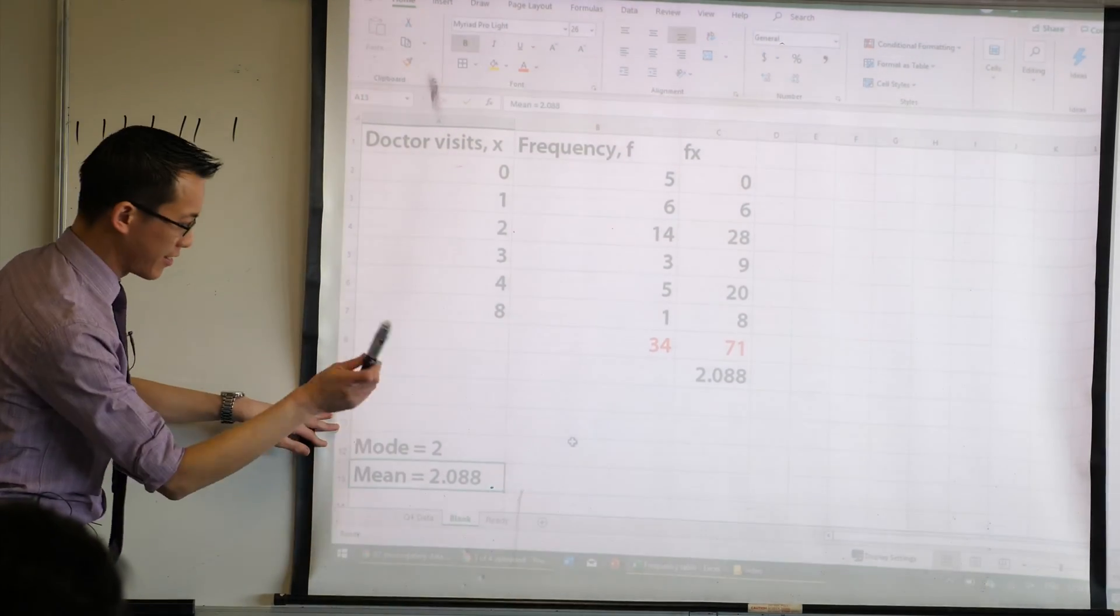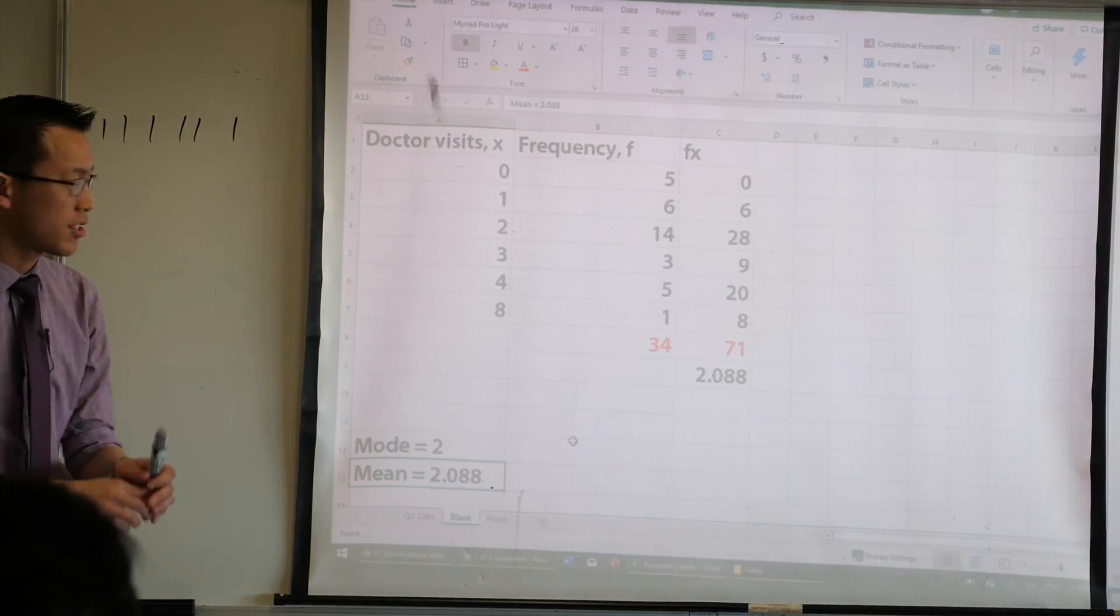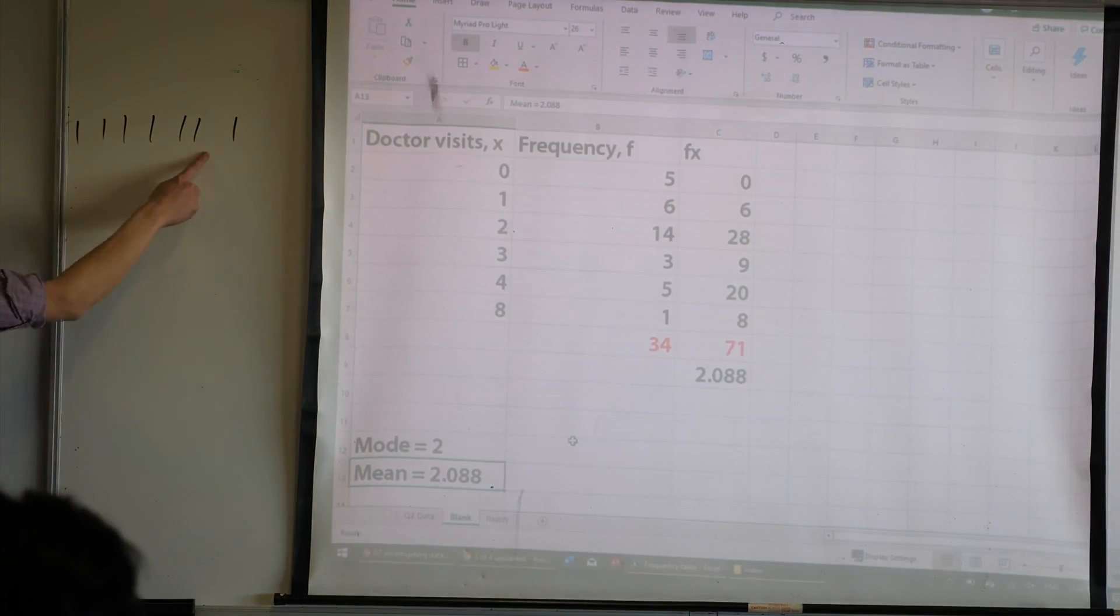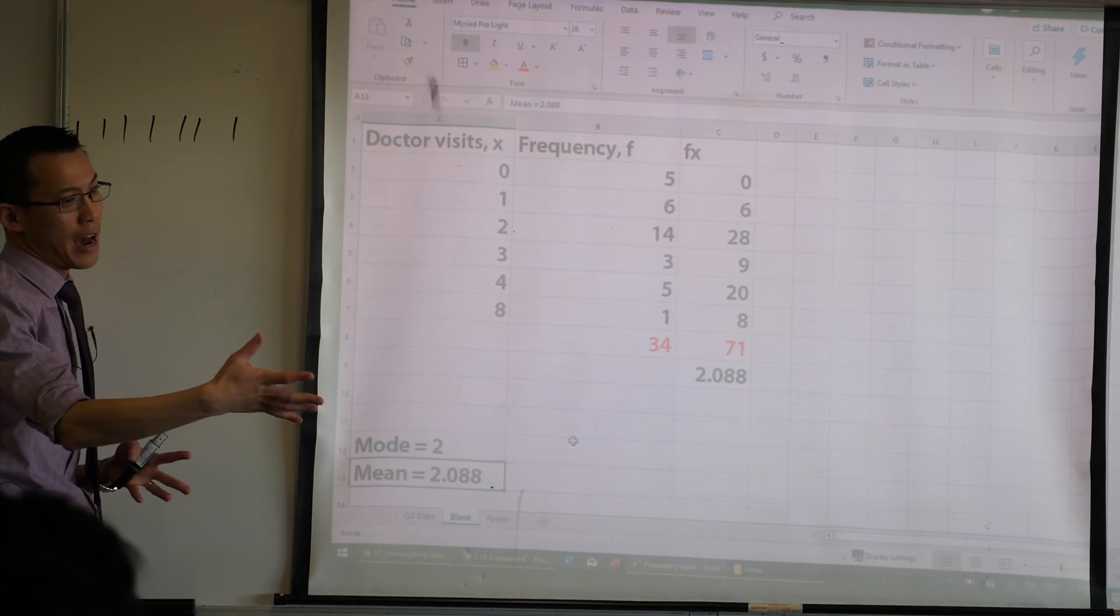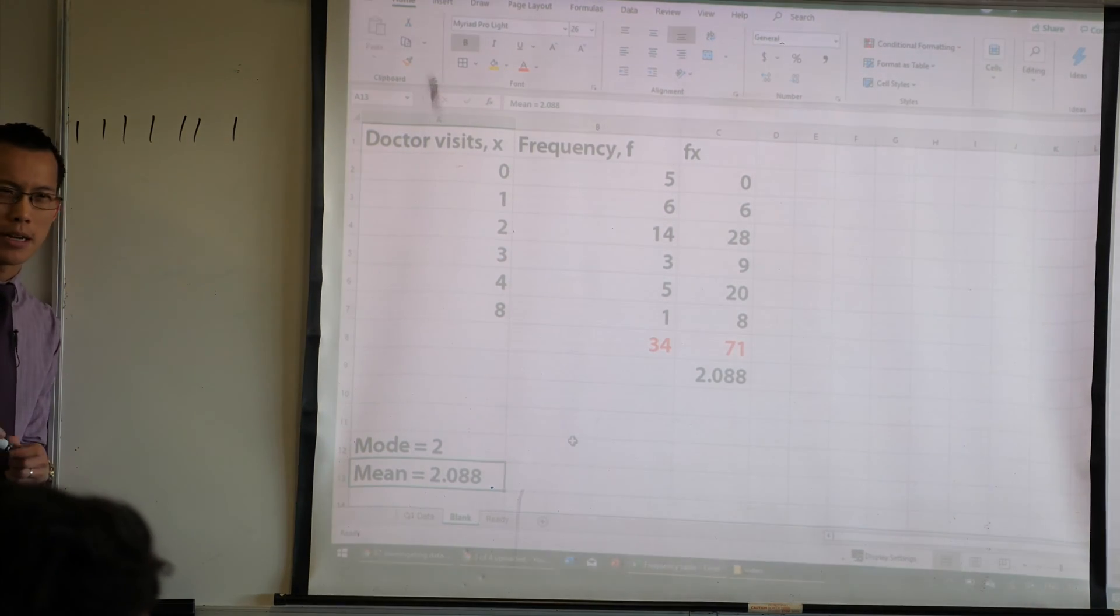So, we've just calculated the mode, we've calculated the mean, which is great. I asked you about median, right? Now just to remember, if you had, for example, seven different people, okay? And they were already in order, like say height order, or age order or something like that. How would I work out what the median is?